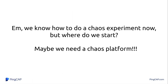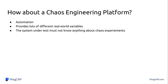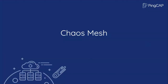Now we know how to do a Chaos experiment, but where to start? We need a Chaos platform. For a Chaos platform, I think it should have the following features: it must support doing Chaos experiments automatically — no one wants to do them one by one manually. The platform must provide lots of different real-world variable simulations. And most importantly, the system under test must not know anything about the Chaos experiment. So here is Chaos Mesh.